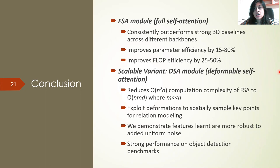These are our conclusions. We propose FSA and DSA. FSA consistently outperforms strong 3D baselines across different backbones, improves parameter efficiency by 15 to 80%, and improves FLOPs efficiency by 25 to 50%. The scalable variant, DSA, reduces the quadratic computation complexity of FSA and exploits deformations through spatially sampled keypoints for relation modeling. Both are more robust and achieve strong performance on 3D object detection benchmarks. Thank you very much.